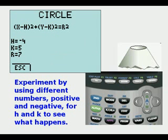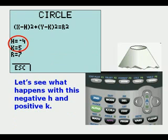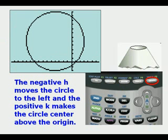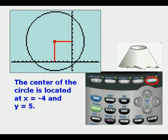We can experiment by using different numbers, positive and negative, for H and K to see what happens. Let's see what happens with this negative H and positive K. The negative H moves the circle to the left and the positive K moves it up. The center of the circle is located at X equals negative 4 and Y equals 5.